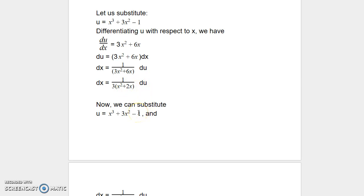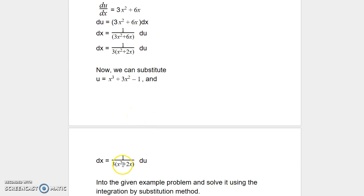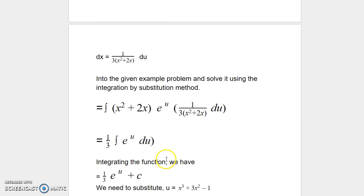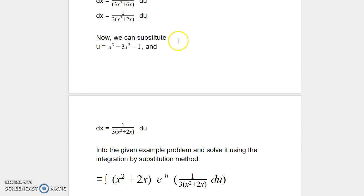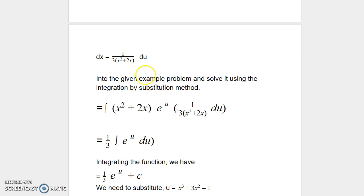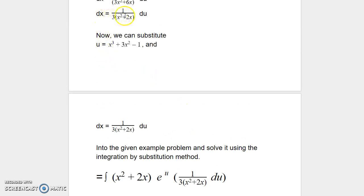Now we can substitute u = x³ + 3x² − 1 and dx = 1/(3(x² + 2x)) du into the given example problem. So we have the integral of (x² + 2x) · e^u · 1/(3(x² + 2x)) du, as you can see here.